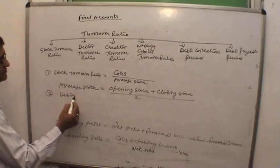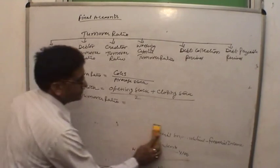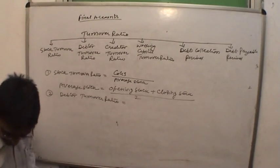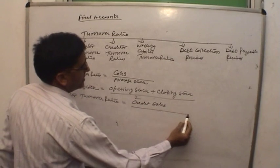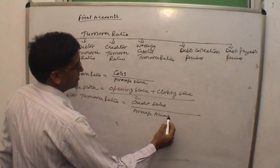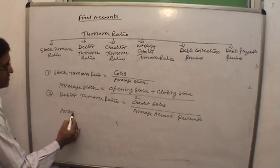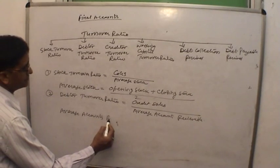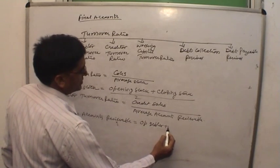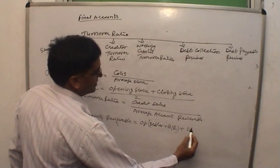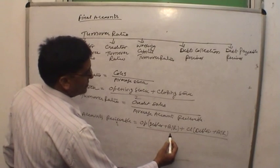Debtor turnover ratio equals credit sales divided by average accounts receivable. Average accounts receivable equals opening debtors plus bills receivable (BR) plus closing debtors plus BR, divided by 2.